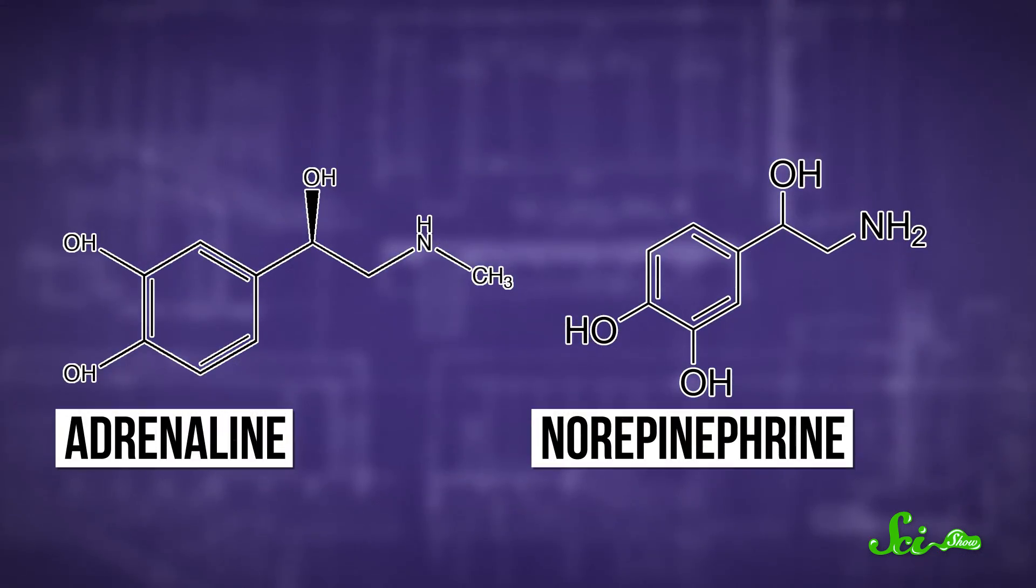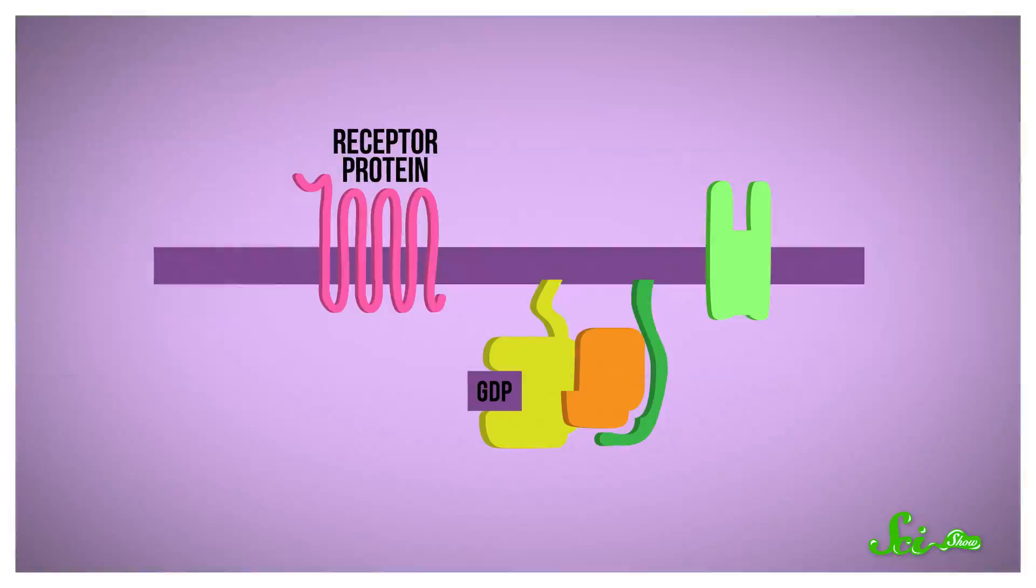There's a whole mechanism that triggers the sympathetic nervous system. Adrenaline, and a similar molecule called norepinephrine, are chemical messengers that beta-adrenergic receptors are set to pick up. The receptors are large proteins that straddle the membranes of cells that need to detect this signal and respond accordingly,